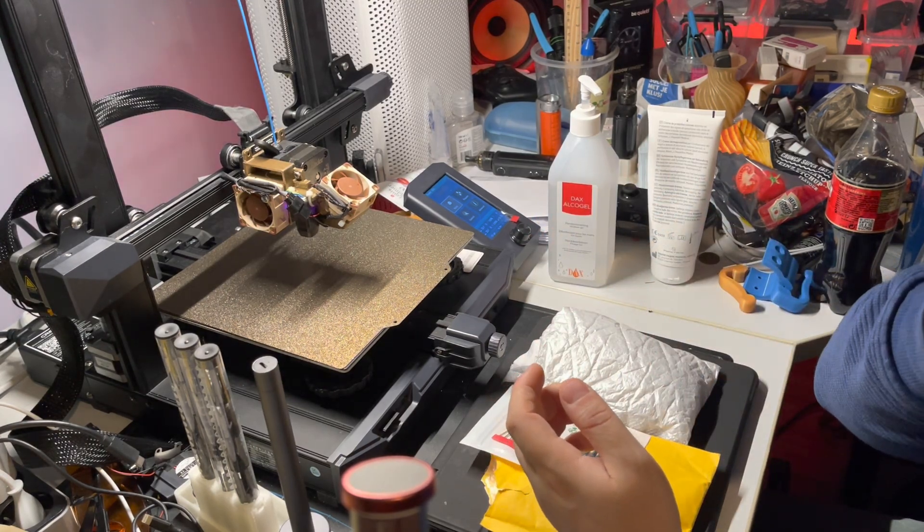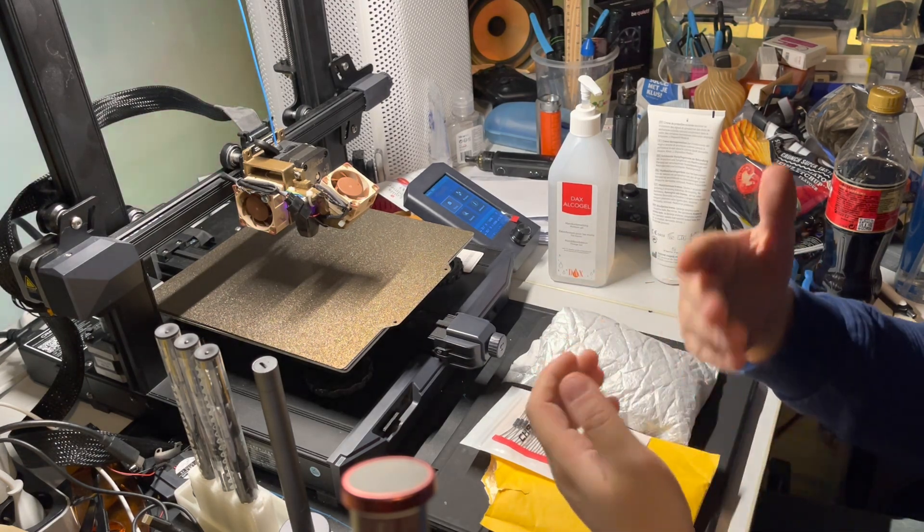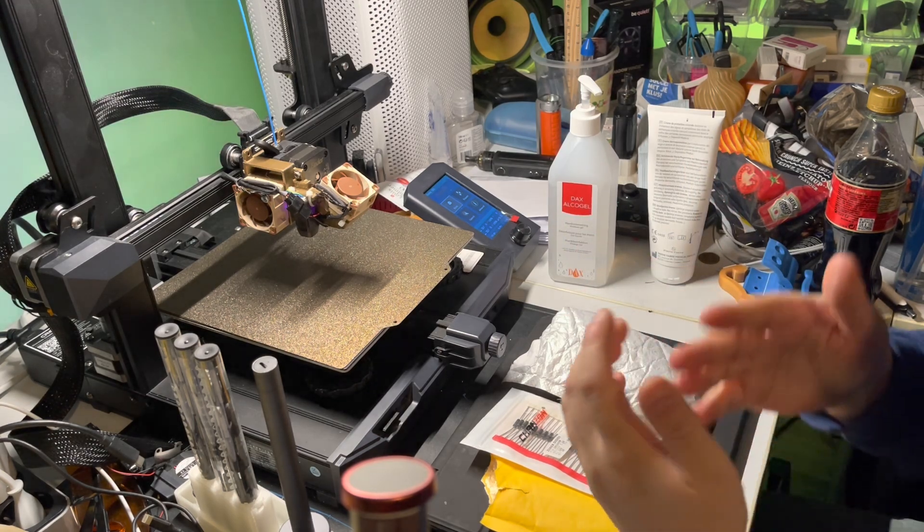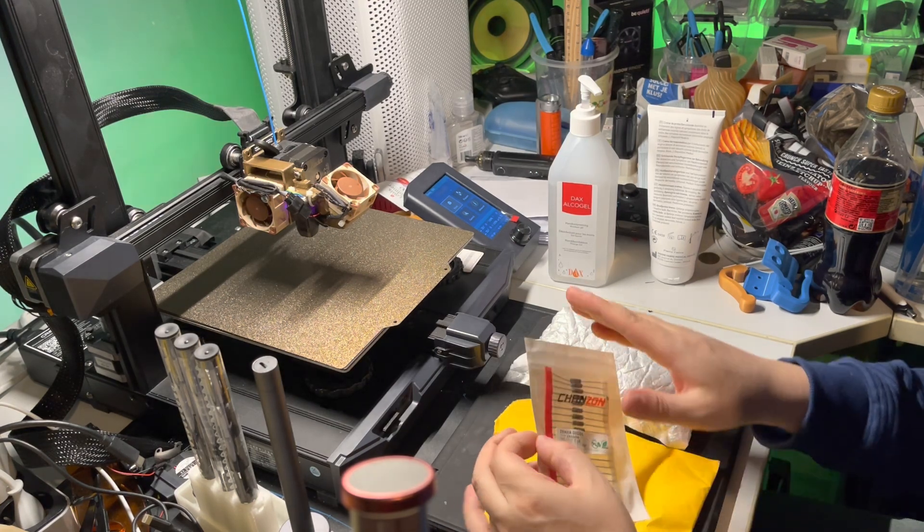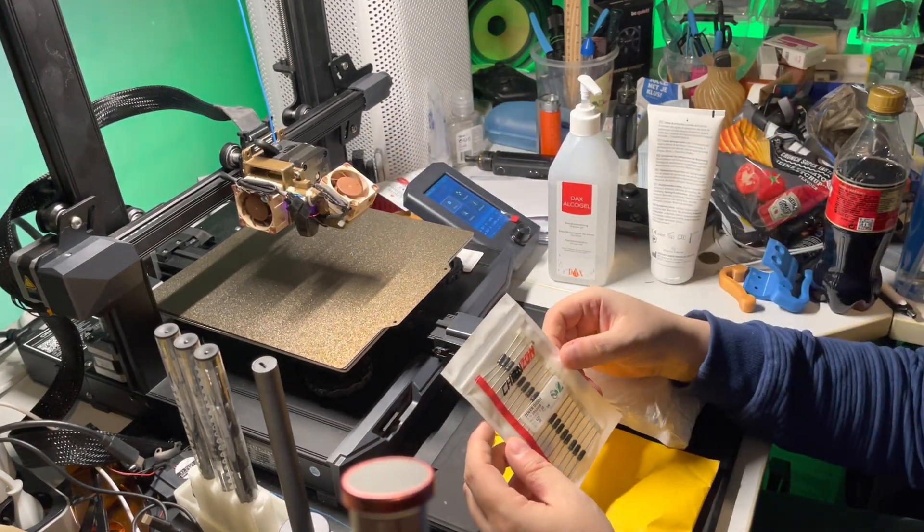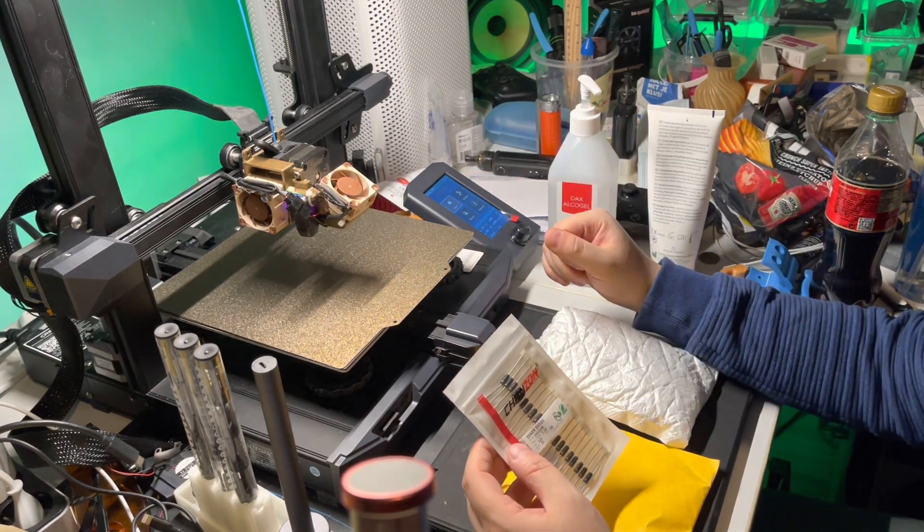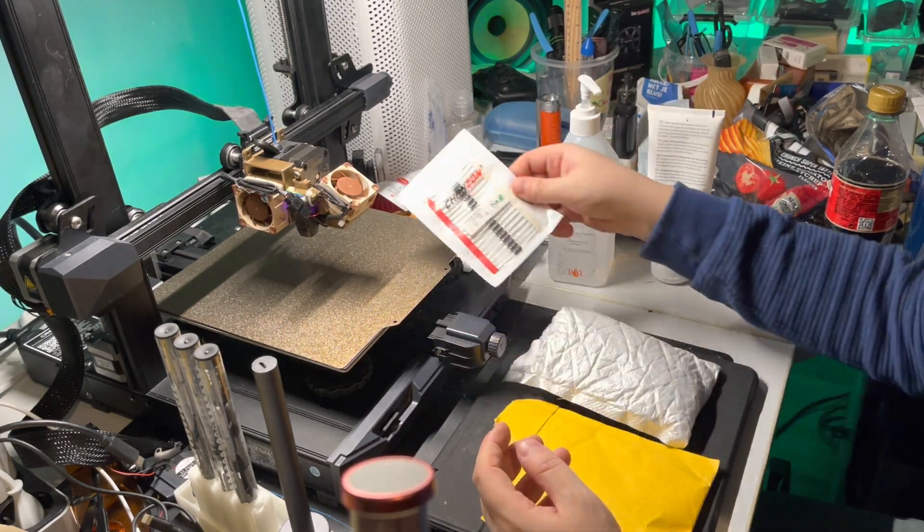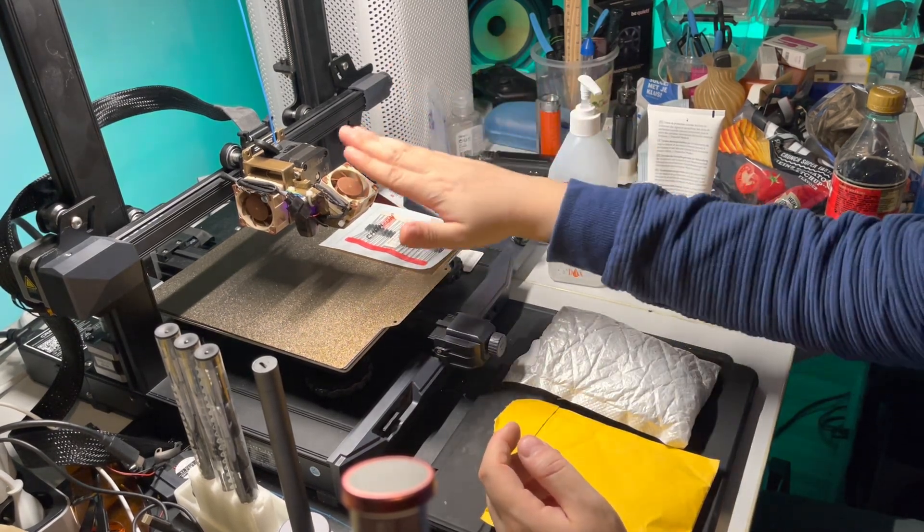Because if you use it on the parts cooling fan, then you will have issues with some prints that do need different layers of venting. So if you need 20% of venting instead of 100% all the time, then I do not recommend using these. This is good for the hotend fan, so keep that in mind. I will use this on my Ender 3 V2 once I get the Sprite Extruder Pro kit for it. But other than that, I recommend you not to use it on the parts cooling fan.